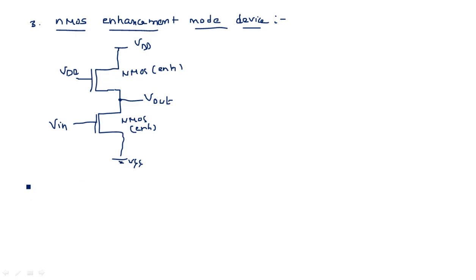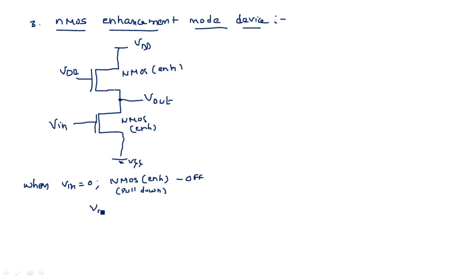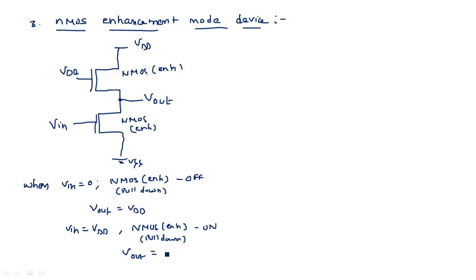When input equals 0: the pull-down NMOS transistor is OFF, and since the pull-up transistor is ON, output equals VDD. When input equals VDD: the pull-down NMOS transistor in enhancement mode comes into ON state, Vout equals 0 volts, and there is a static current flow between VDD and ground.